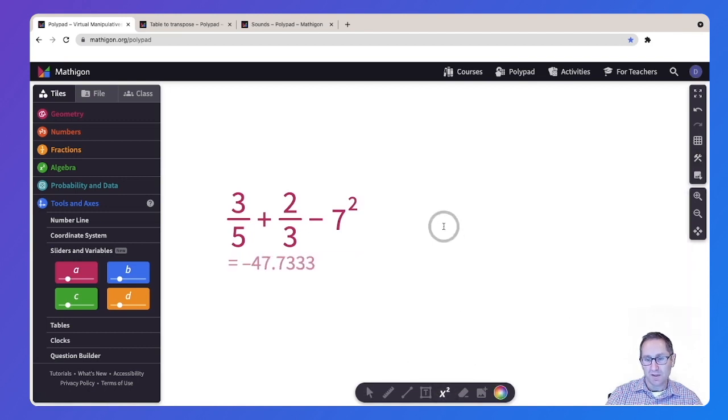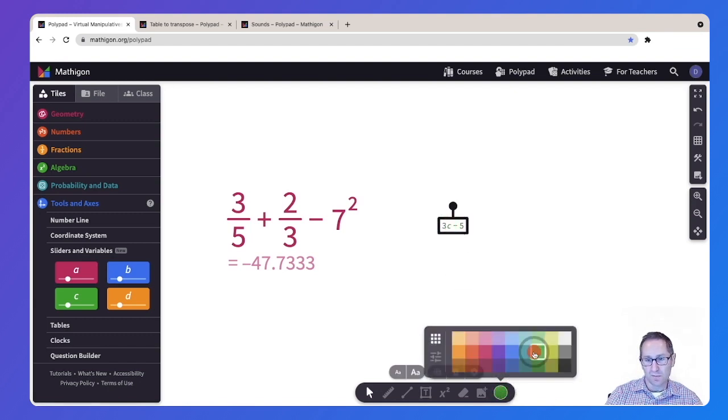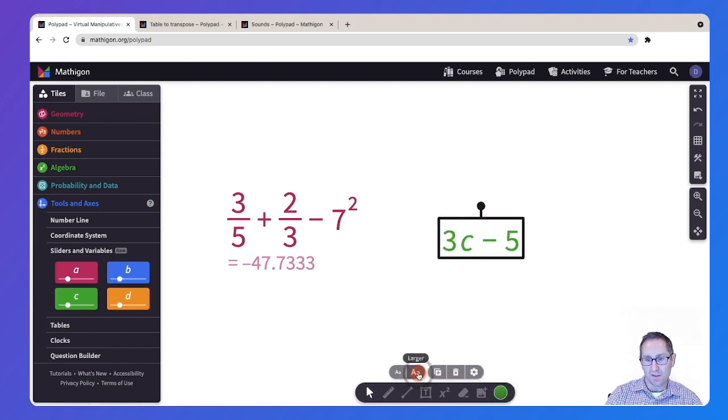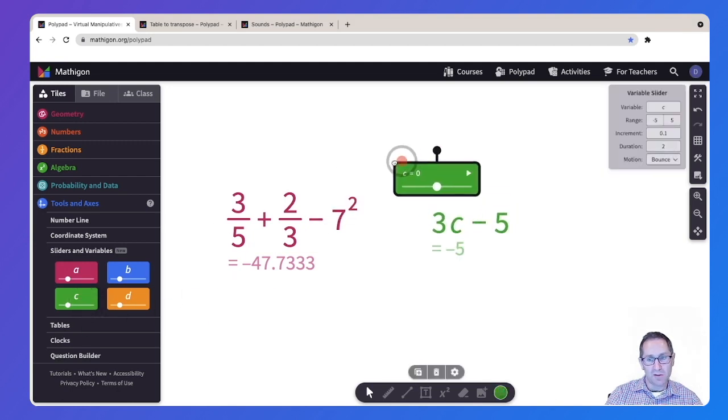The other option here is I can use the sliders with an algebraic expression. Let's say I do 3C minus 5. Make this a different color, maybe green. Make it nice and big. So there's 3C minus 5. I can put the value of C on the canvas. You can see as soon as I drag it onto the canvas, it shows me the value of this expression is negative 5.